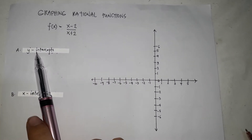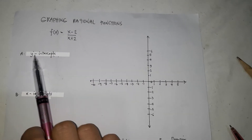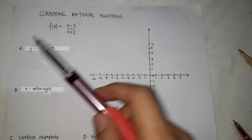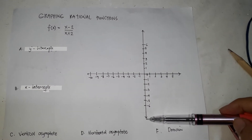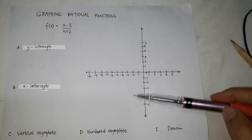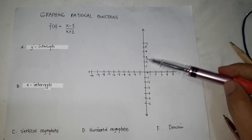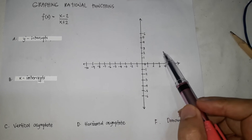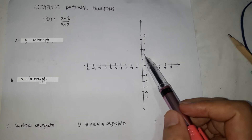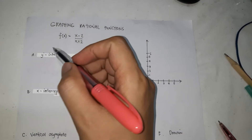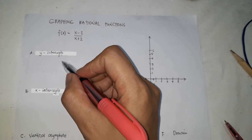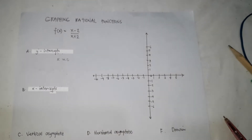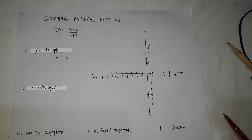The first one is the y-intercept. The y-intercept is the point where the graph intercepts the y-axis — where the graph passes through the y-axis. To get that, what you're going to do is let x be equal to 0.